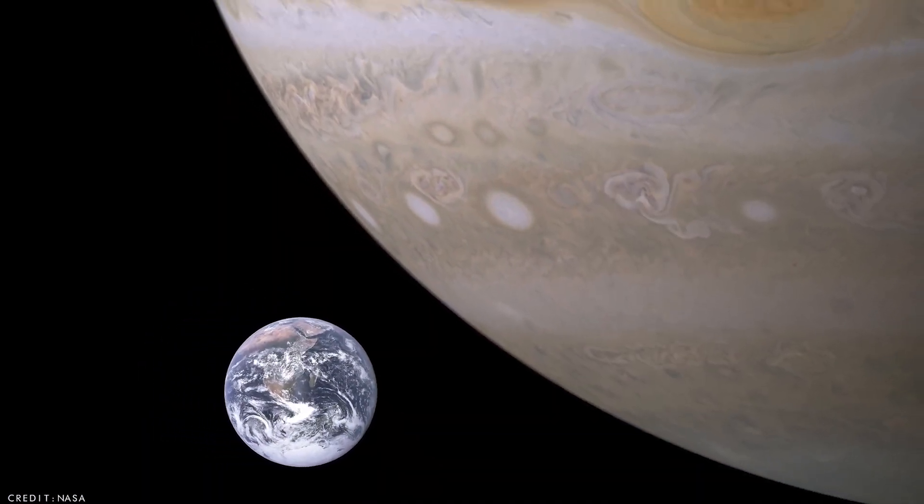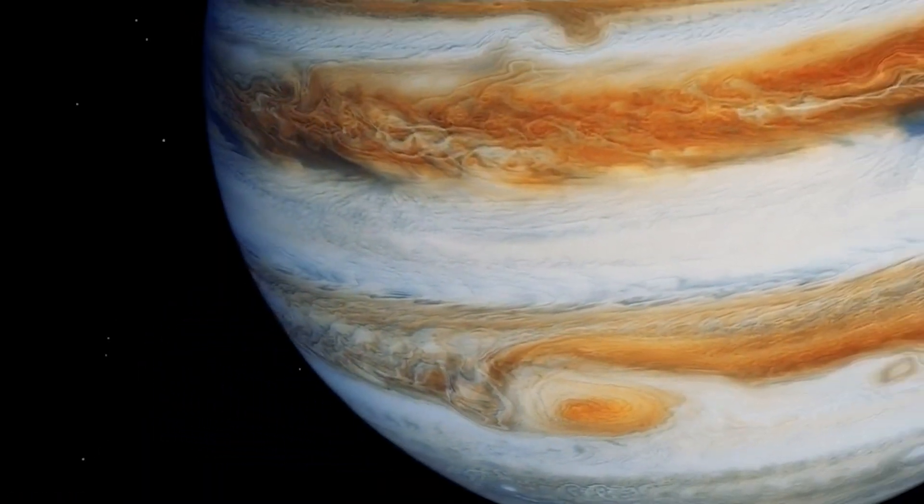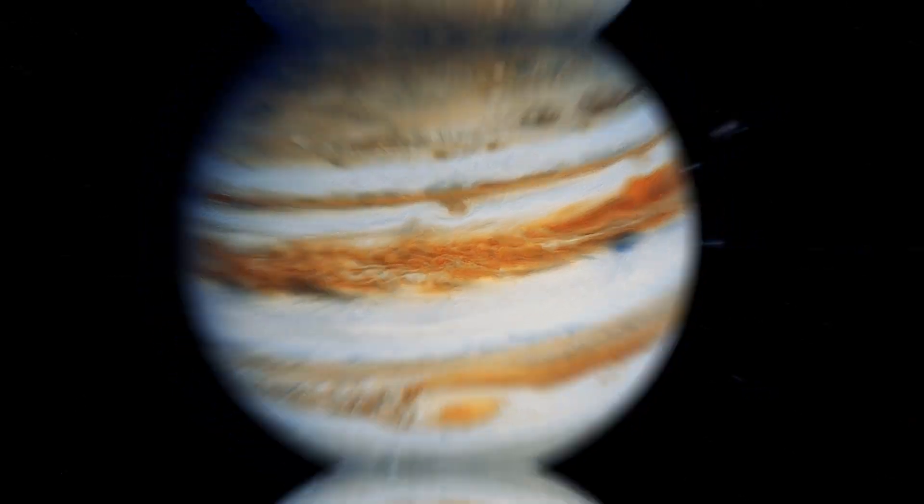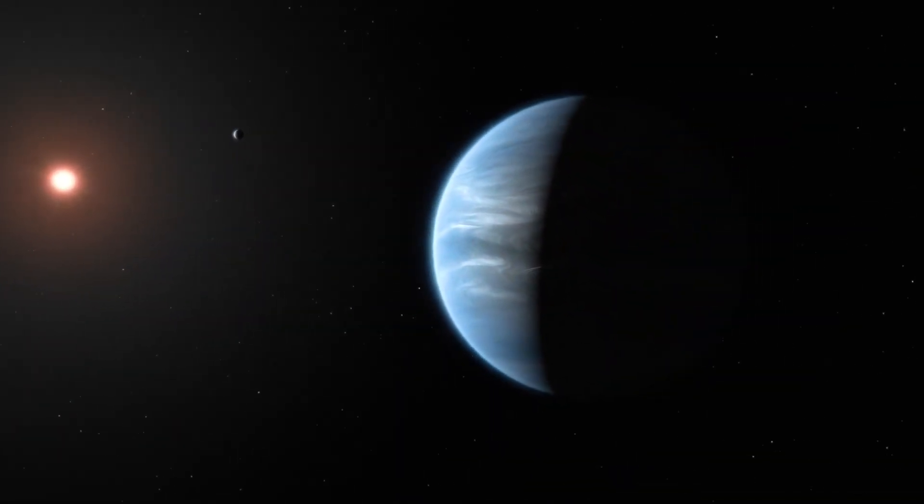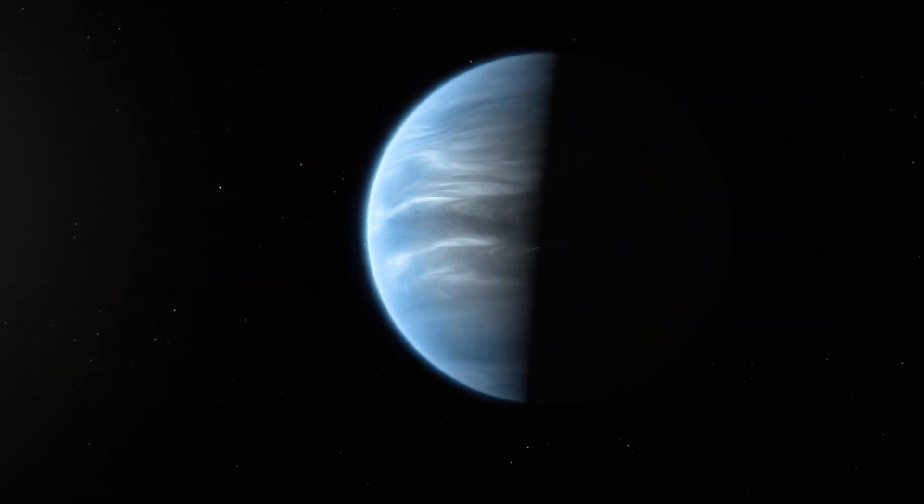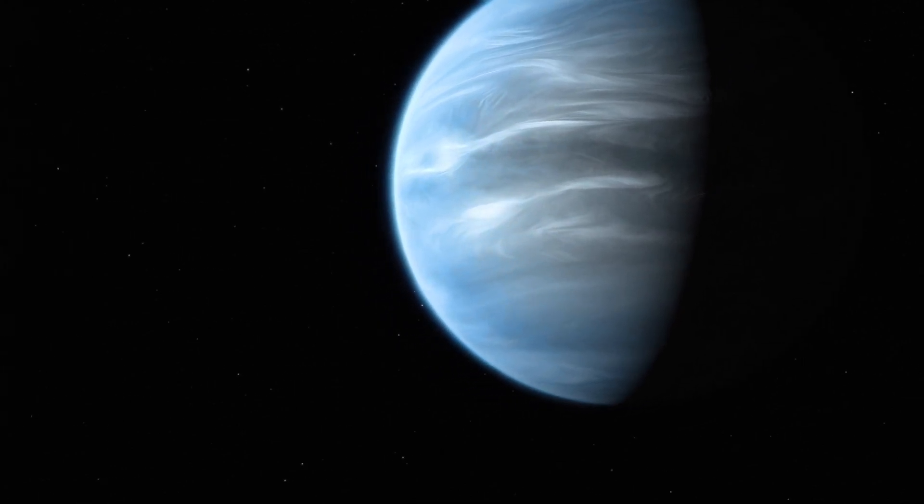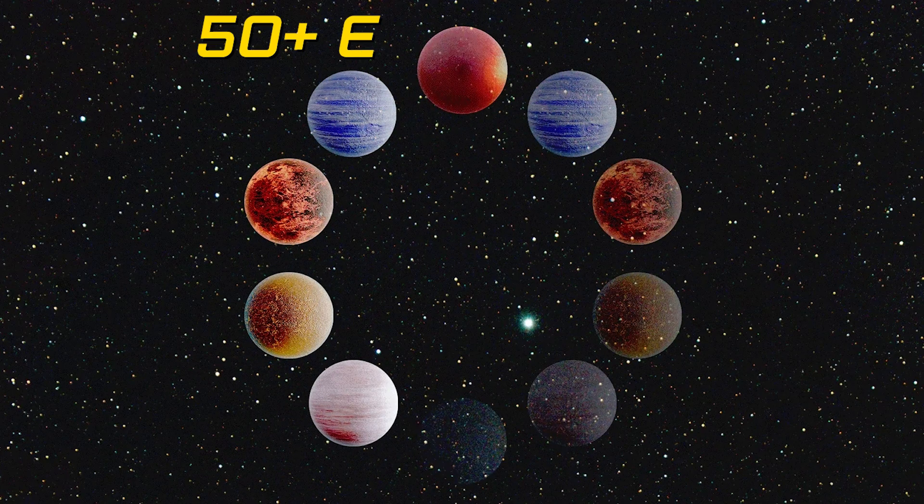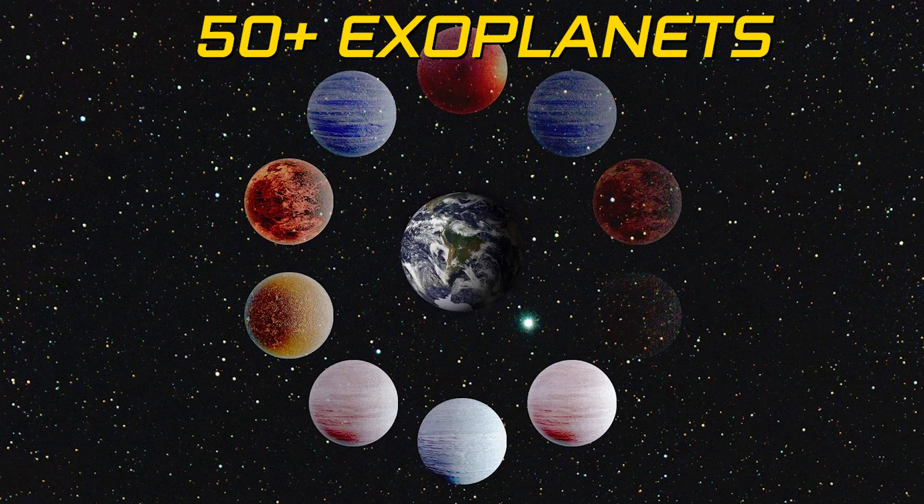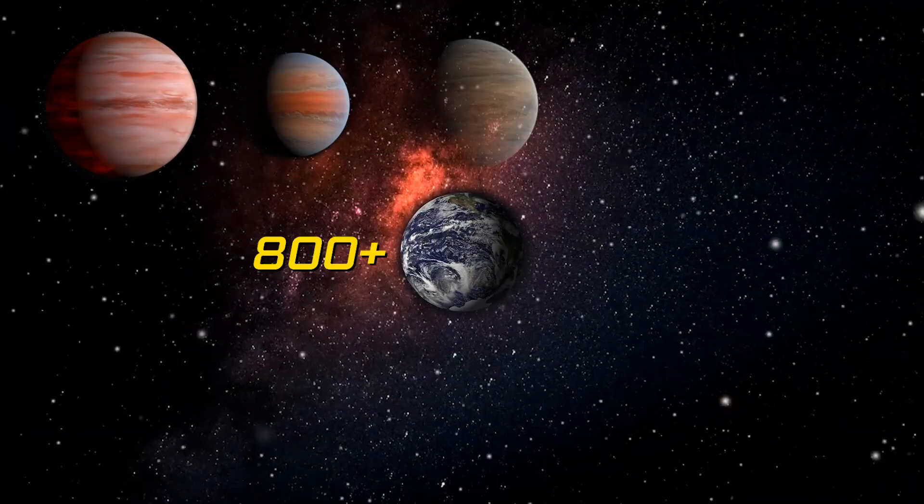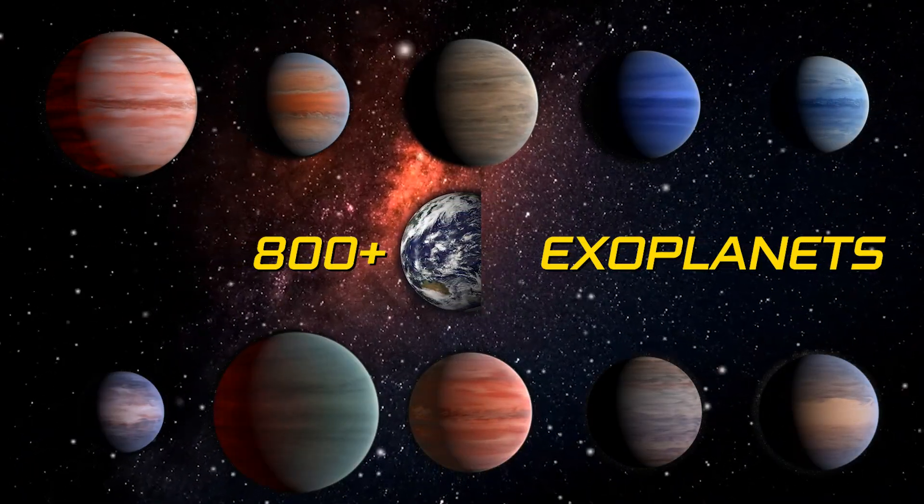Initially, most of these discoveries revolved around massive gas giants. However, as our capabilities have broadened, we've begun to stumble upon smaller, Earth-like exoplanets. In fact, scientists have already identified more than 50 exoplanets with masses akin to Earth, and over 800 worlds with a radius less than half of Earth's.